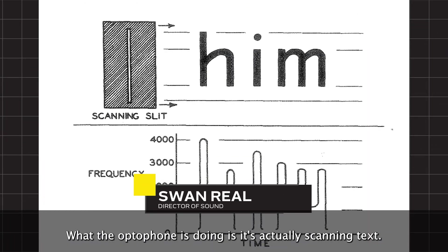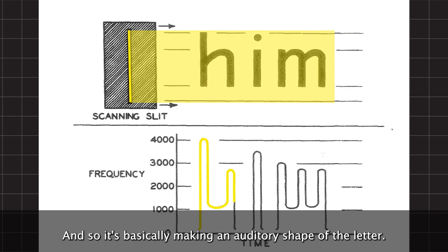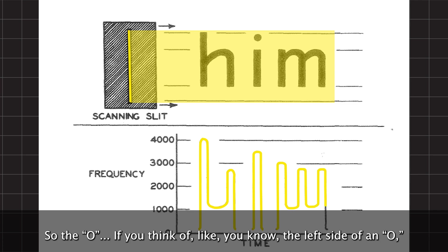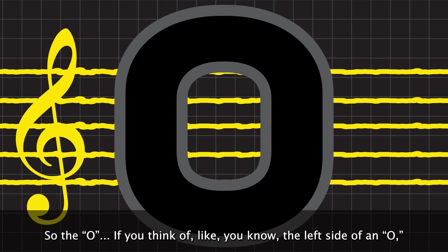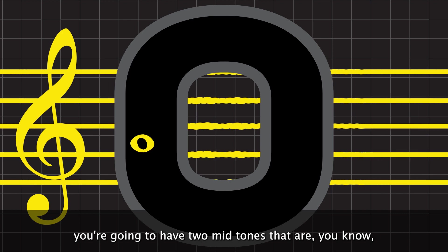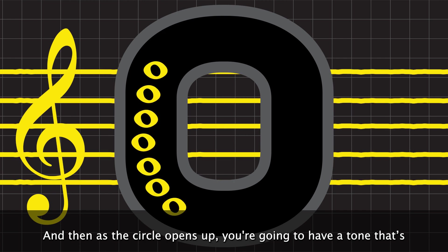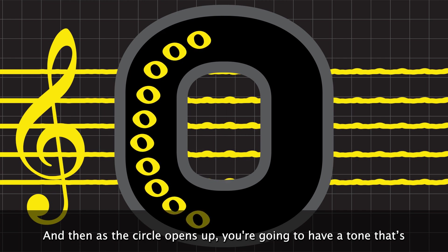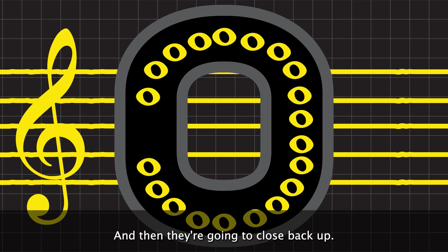What the optiphone is doing is it's actually scanning text. And so it's basically making an auditory shape of the letter. So the O, if you think of the left side of an O, you're going to have two mid-tones that are very close to the middle, very close to each other. And then as the circle opens up, you're going to have a tone that's high and a tone that's low. And then they're going to close back up.